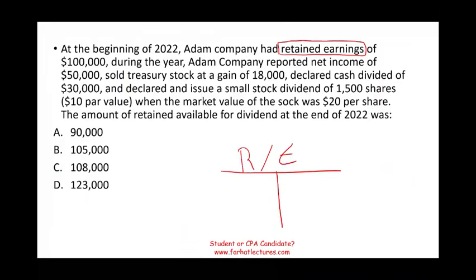At the beginning of 2022, Adam Company had retained earnings of $100,000. You should immediately think: I have a credit of $100,000 in retained earnings, or simply a beginning balance of $100,000. During the year, Adam Company reported net income of $50,000. Net income means retained earnings will increase by $50,000.